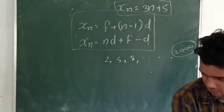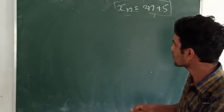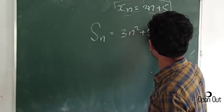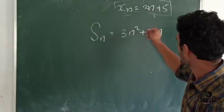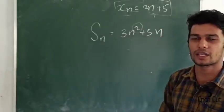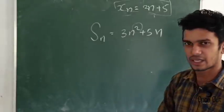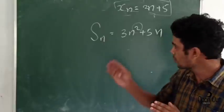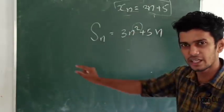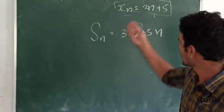We call this the nth term equation. This is the same equation. Sn is equal to 3n squared plus 5n. We call this the second term — how much is the common difference? We call this sequence and the nth term again — the second term is the equation.